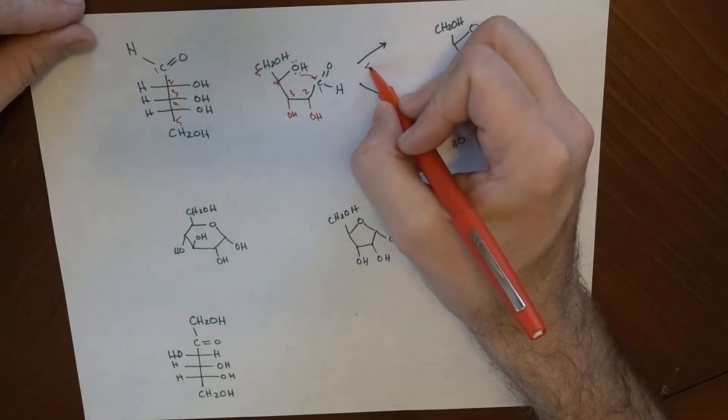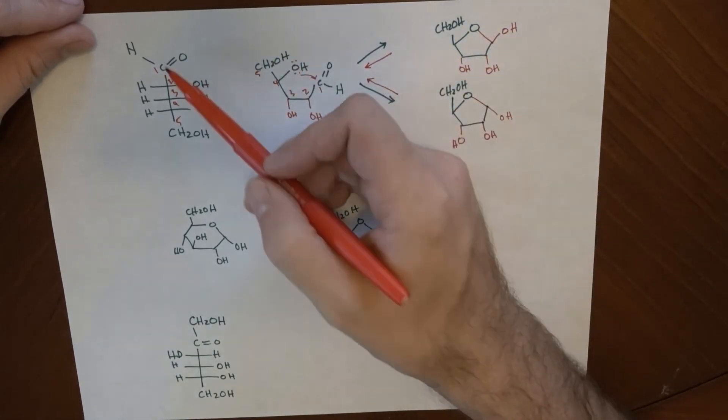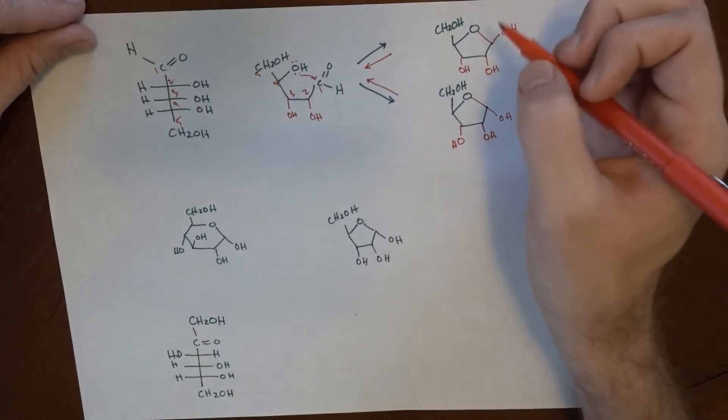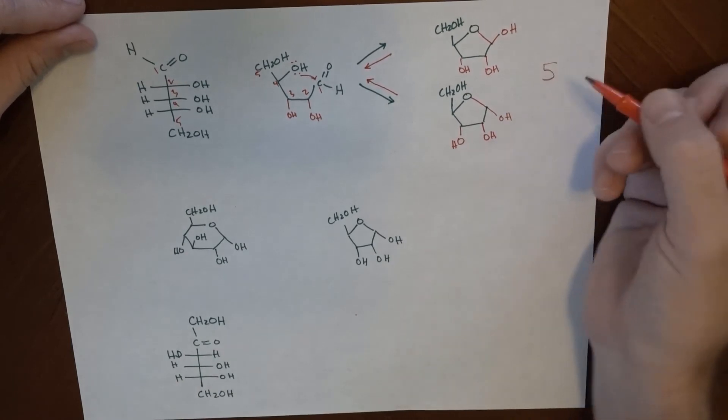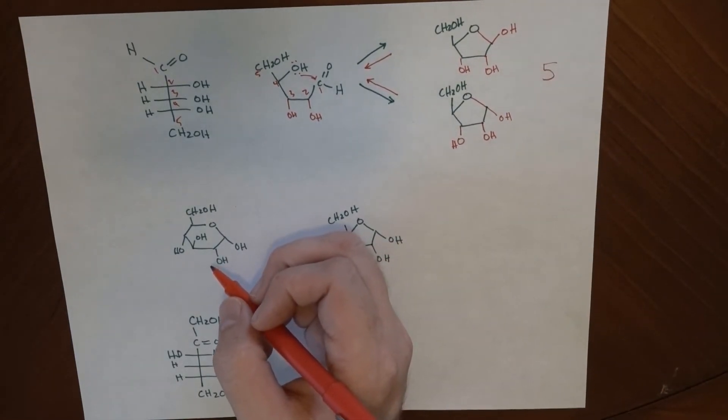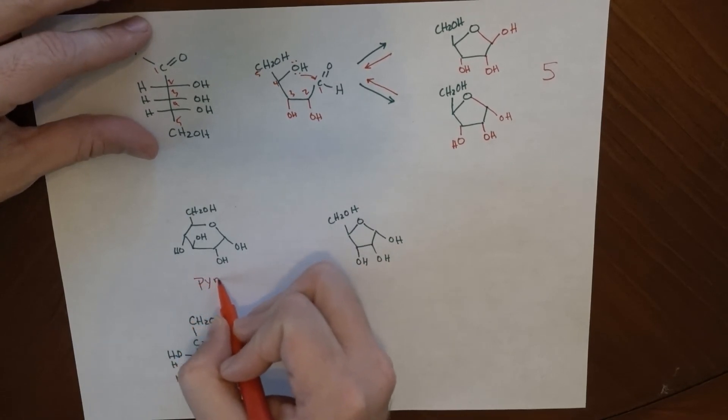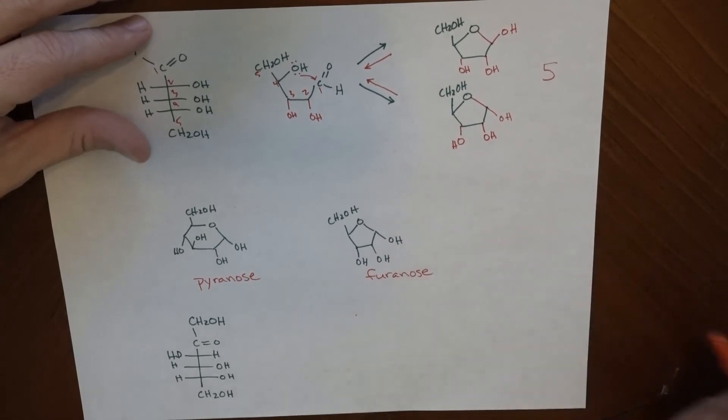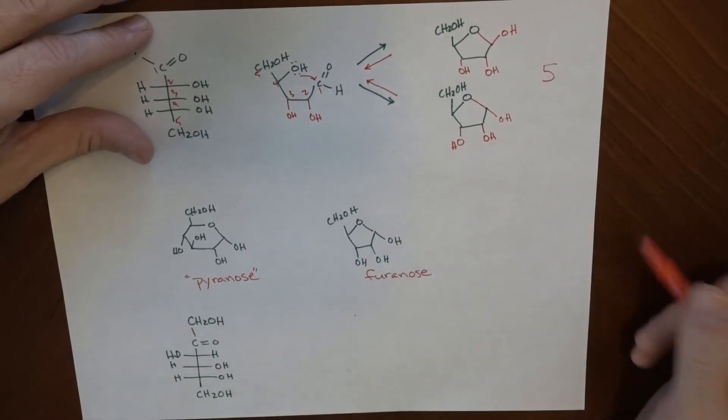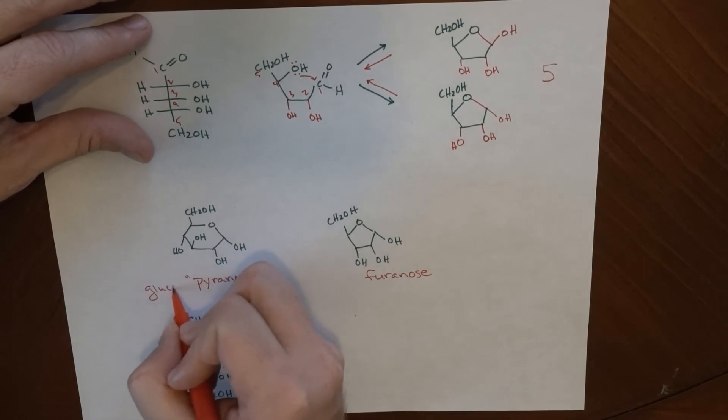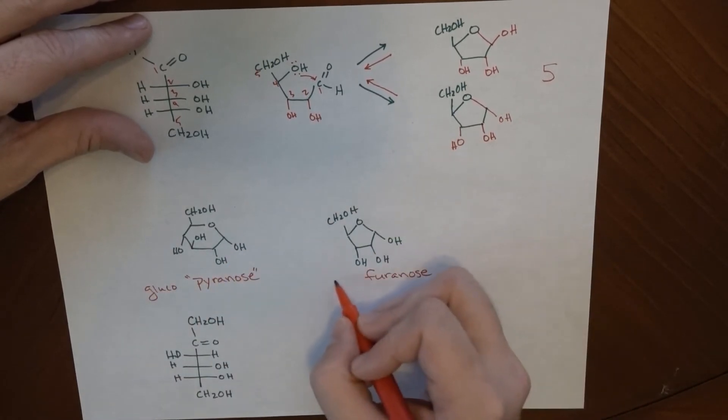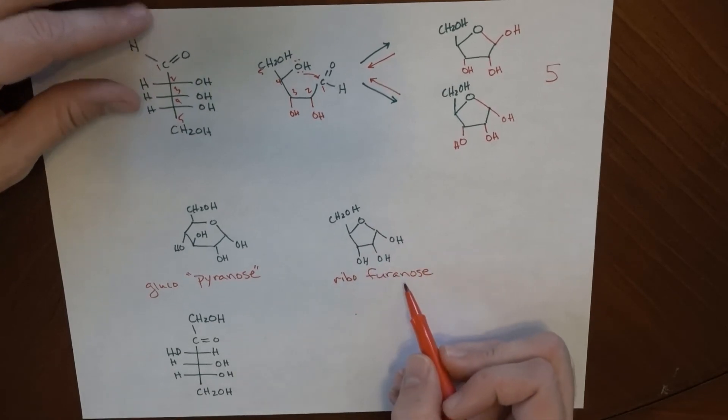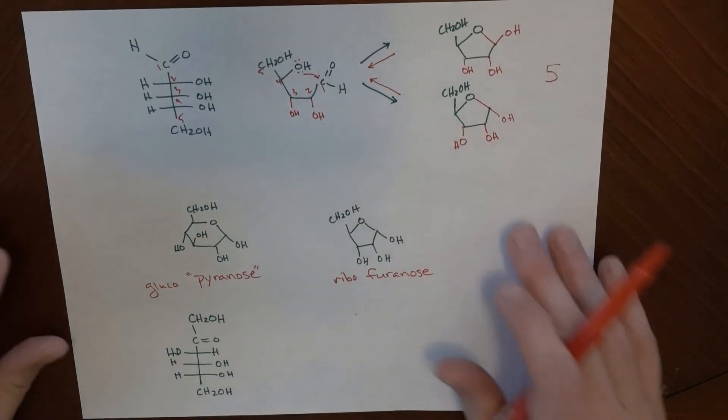Those are the two different reactions, and again, these are equilibria. So, if I have 1, 2, 3, 4, 5 carbons in here, I end up getting a 5-membered ring. These, right here, when we form 6-membered rings, these are known as pyranose. And, if we're forming a 5-membered ring, these are known as furanose. So, these are classes of compounds. This would be a glucopyranose. And, this would be a ribofuranose. That is, it's a ribose as a cyclic furanose, and it's a glucose as a cyclic pyranose.